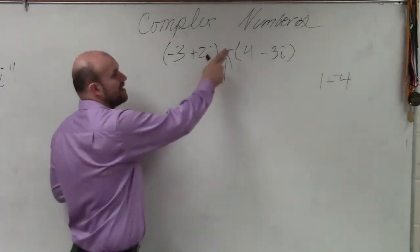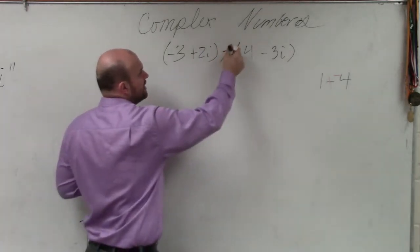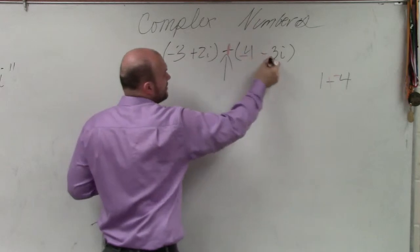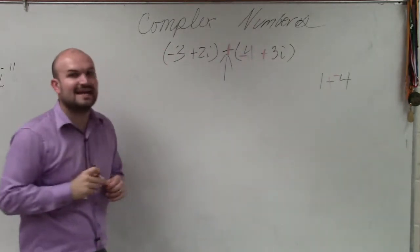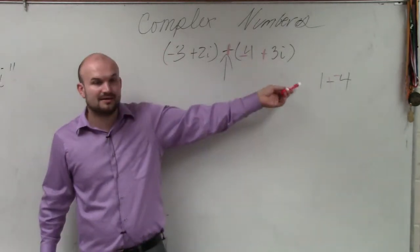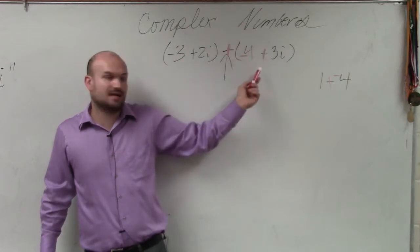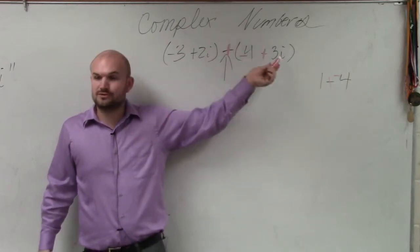So what I'm going to do is rather than subtract, I am going to rewrite this as an addition problem. And when I do that, I have to negate everything I'm subtracting by. So if that's a positive 4, it now turns to a negative 4. If that's a negative 3, it now turns to a positive 3.